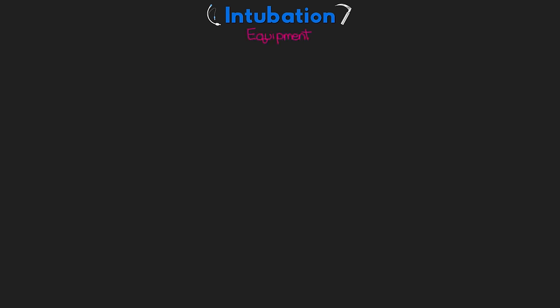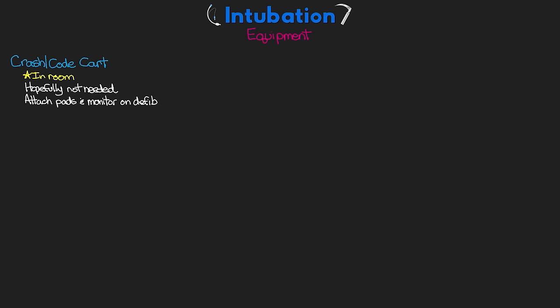From here we want to get equipment and prepare for the intubation. First and foremost is going to be our crash cart or code cart — go ahead and get this ready and in the room. Hopefully we won't need it, but there's certainly a chance that we will, especially in the crashing or emergent patient. It may also not be a bad idea to go ahead and get those defibrillator pads on and have the defibrillator hooked up to the patient and monitoring.